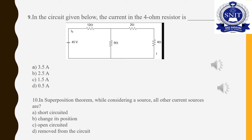We are to find the current in the 4-ohm resistor. Options are 3.5, 2.5, 1.5, and 0.5 ampere. If we know the theorems, we are able to solve the problems as well as the theory questions.